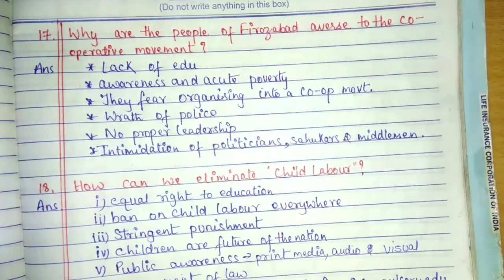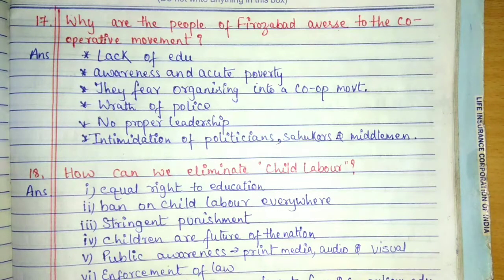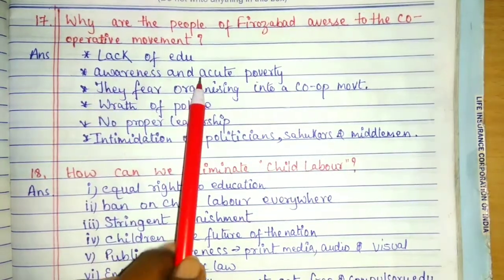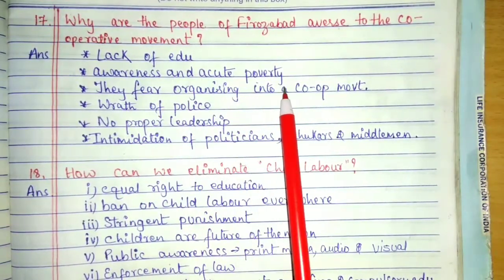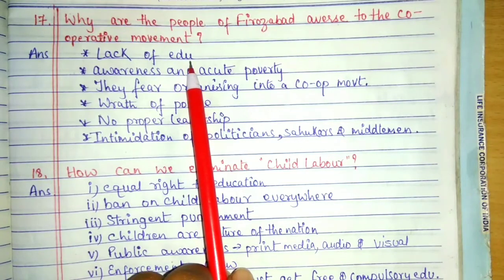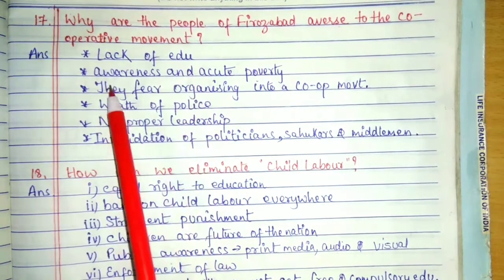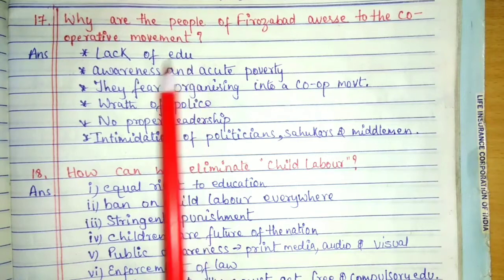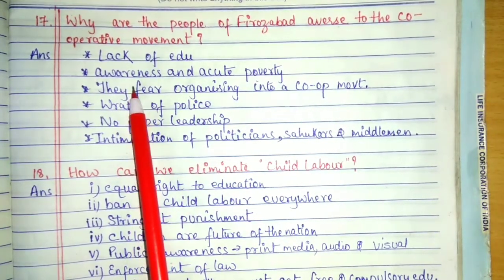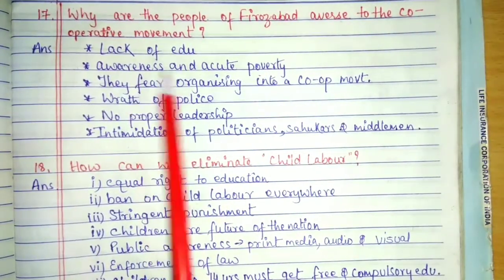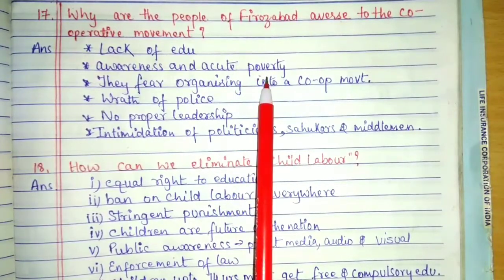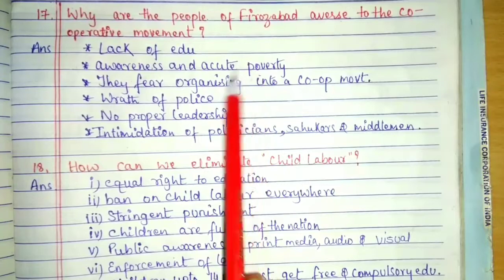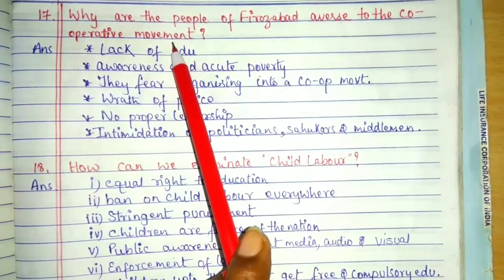Why are people of Ferozabad averse to the cooperative movement? First, lack of education — they don't know about their rights or what illegal things are being done to them. Lack of awareness: they are completely unaware. Acute poverty: every day they have to work and eat; they cannot skip a day. This discourages them from organizing a cooperative movement.